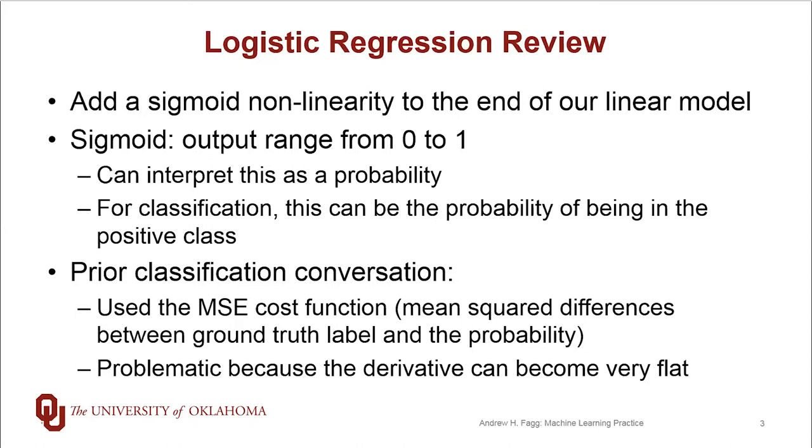Specifically a sigmoid. This sigmoid has an output range from 0 to 1, and this allows us to interpret the output of a network as being a probability. From the context of classification, we can then interpret this probability as being the probability of some input being in the positive class.